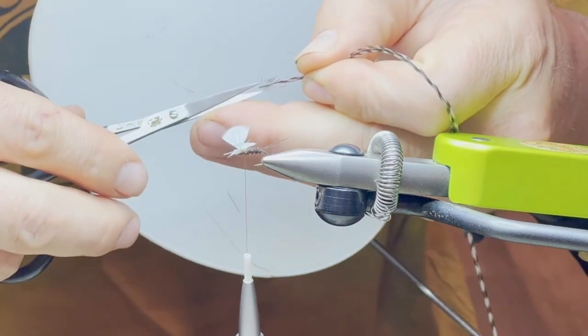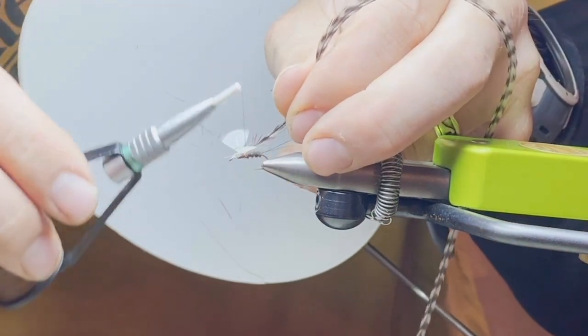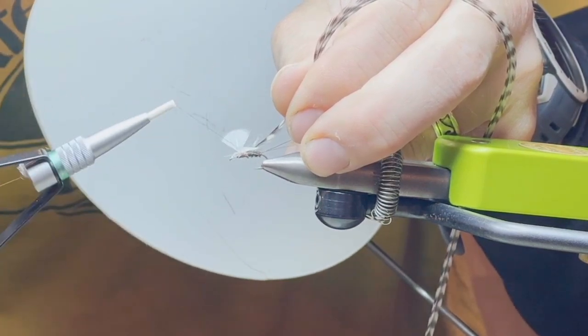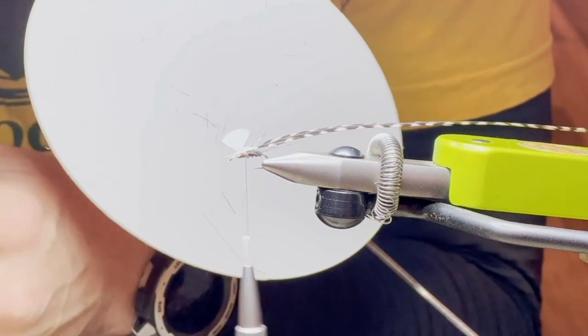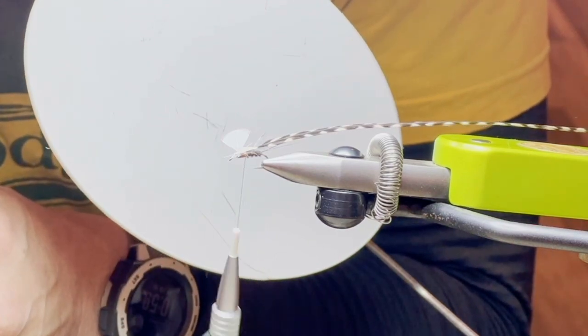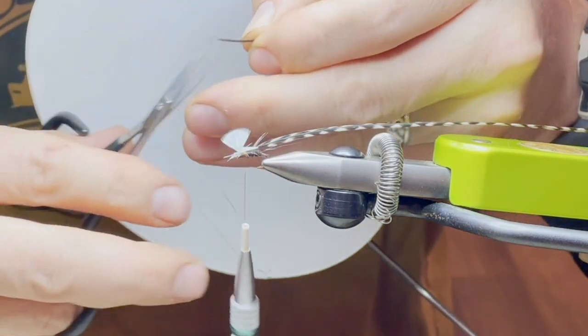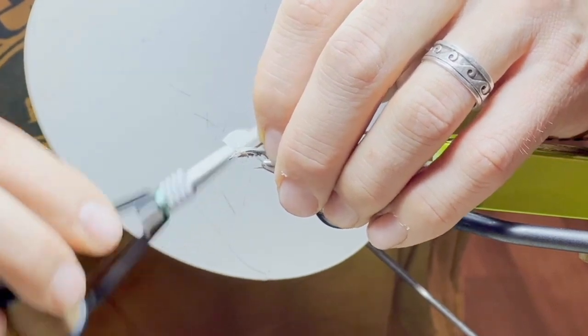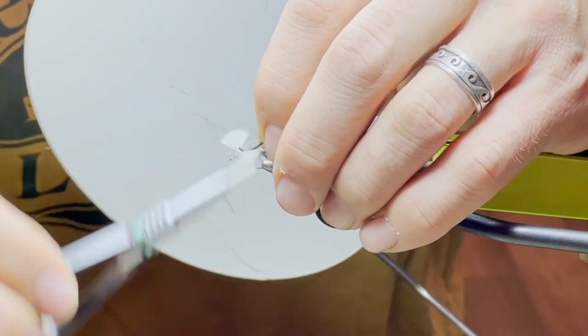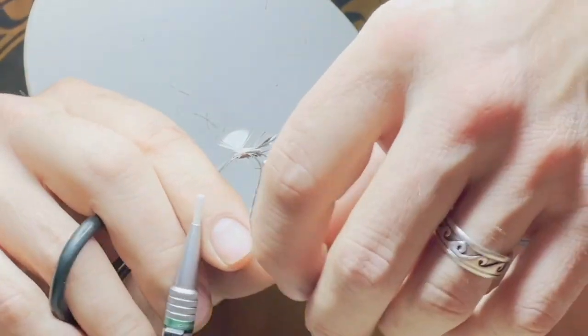This is a size 16 that we pre-size for you because you want a little bit smaller hackle so those wings stand out. Then what I usually do at this stage is I'll take a couple more turkey fibers like this and I'll tie them down behind the wing, and then I'll wrap through.